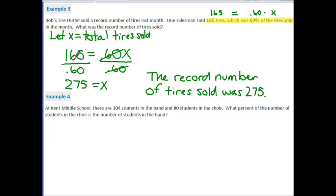Finally, let's take a look at example four. At Kent Middle School, there are 104 students in the band and 80 students in the choir. What percent of the number of students in the choir is the number of students in the band? This is really similar to our example one, part B, where we're not just using the general idea of percent is equal to part divided by whole. I'm using what they tell me to compare as a ratio, which is the percent of the number of students in choir to the number of students in the band. So my formula here is going to be percent is equal to the choir students divided by the band students.